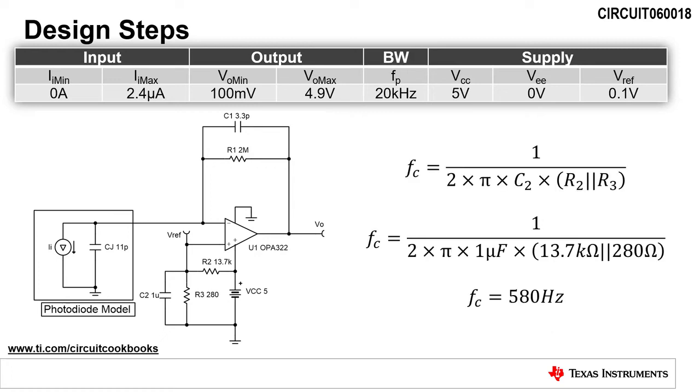The last step is to calculate the cutoff frequency, FC, due to C2, which helps filter noise out of the reference voltage. Here, we will select C2 as 1 microfarad. Using the equation shown, we calculate the cutoff frequency to be 580 hertz.